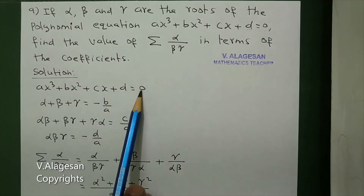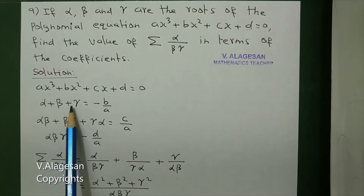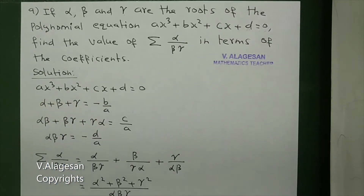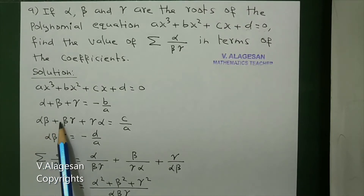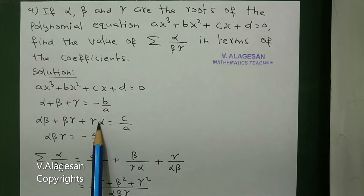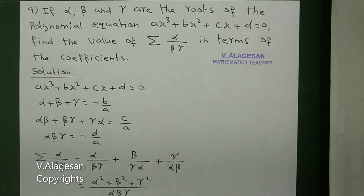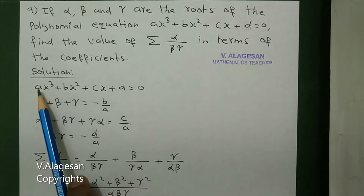From the given equation: sum of the roots, alpha plus beta plus gamma equals minus b by a. Next, sum of the product of two roots: alpha beta plus beta gamma plus gamma alpha equals c by a. Next, product of three roots: alpha beta gamma equals minus d by a.